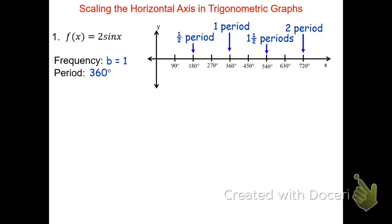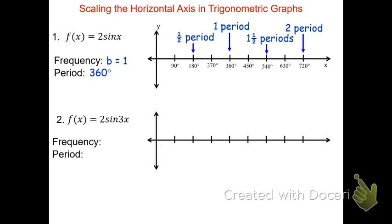Now let's look at an example where the frequency is not one. Here I have f of x equals 2 sine of 3x. Now the frequency is three, which means the period is 360 degrees divided by three. 360 degrees divided by three is going to be 120 degrees, which represents one full period. Again in my graph I have my eight tick marks to represent two full cycles. If we go to the fourth mark, that is what we'll label 120 degrees here. This represents the one period.